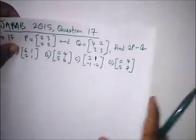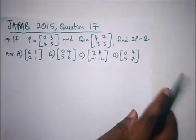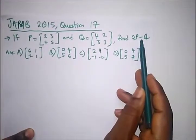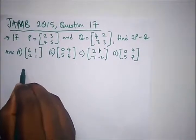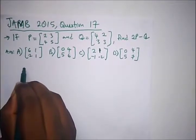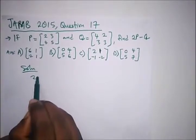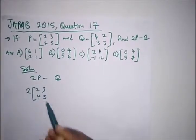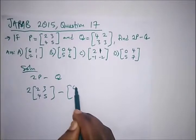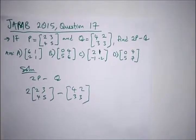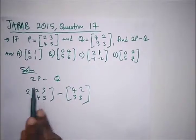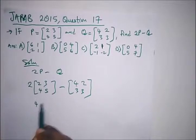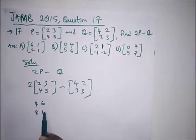We have this question from JAM 2015 Question 17. It says: if P is this and Q is this, find two P minus Q. So we're looking for two P minus Q. That would be two times the matrix: two, three, four, five — minus the matrix: four, two, three, three. Multiplying two into all elements in this bracket: two times two is four, two times three is six, two times four is eight, and two times five is ten.